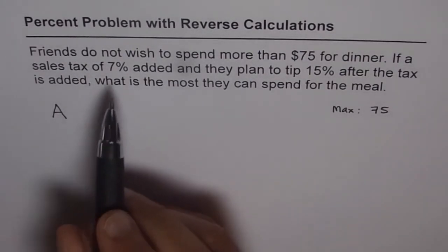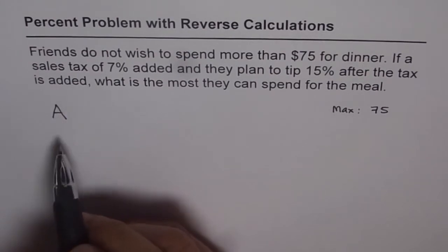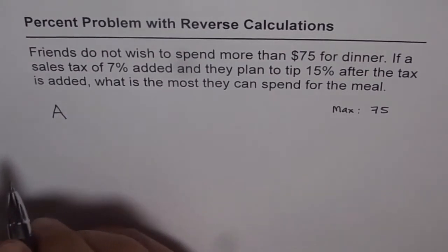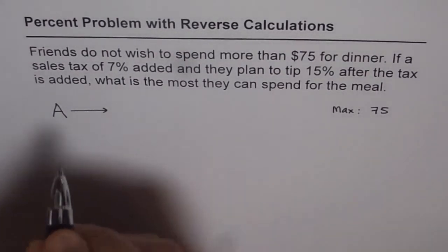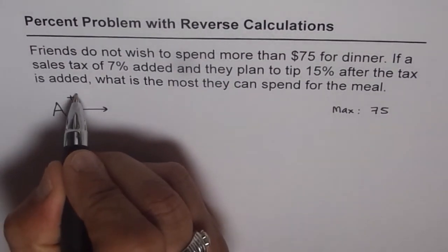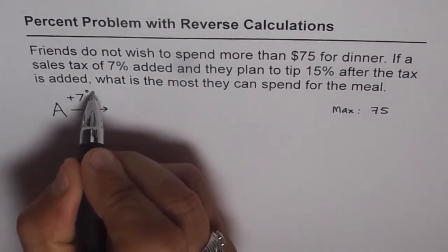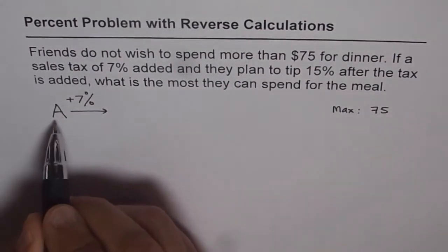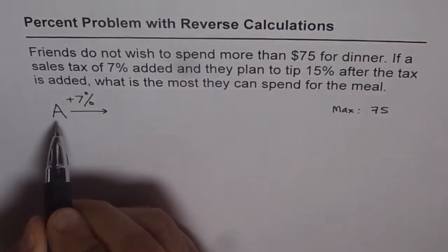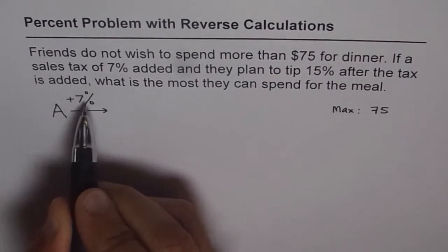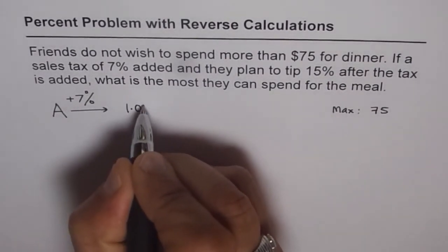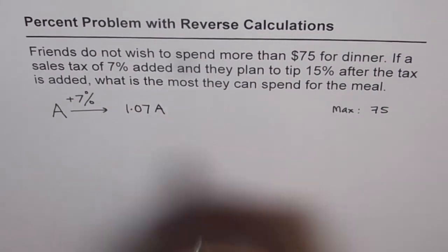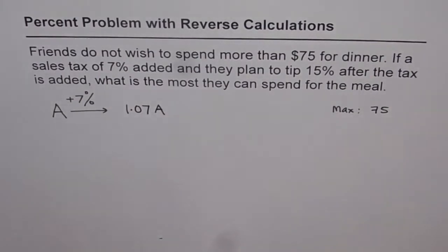Now, if you add 7% to A, what will it become? When you add 7%, assume A is 100%. So adding 7% means it becomes 1.07 times A — it will be increased by 7%.